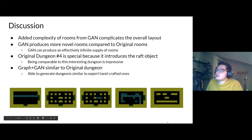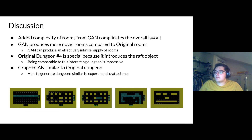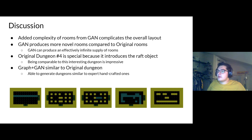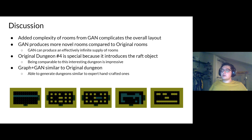Wrapping up our results: the added complexity of GAN rooms complicates the overall dungeon layout, even when the graph grammar process is the same. The GAN produces more novel rooms compared to original rooms, and provides an effectively infinite supply of rooms. Original dungeon 4 was already a very novel dungeon due to its introduced raft object, and people liked it a lot — yet the graph GAN scores were similar to the original in several categories, showing we generated dungeons comparable to expert handcrafted ones.